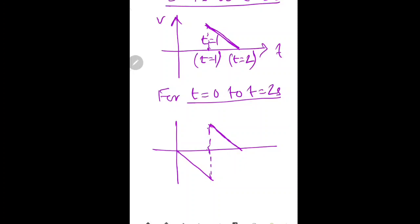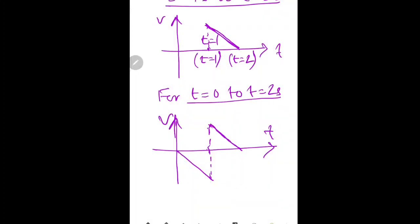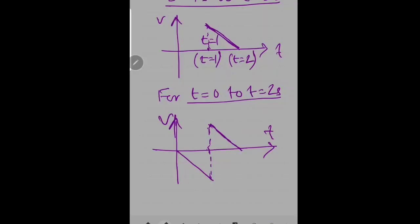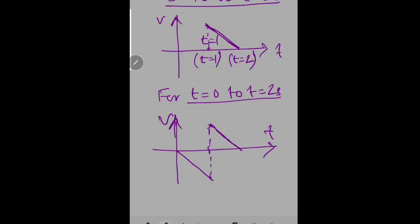So this is our instantaneous velocity-time graph — the relation that justifies the given displacement-time graph for this question. I hope you understood and found it useful. If you did, please forward it to your friends, like the video, subscribe to the channel, and share it so more students can join and benefit from these lectures. Thank you.